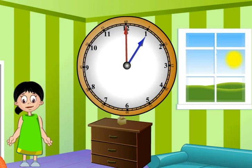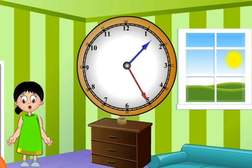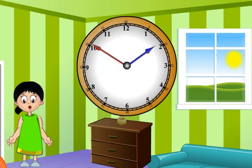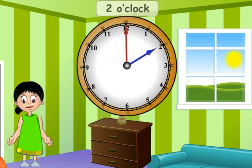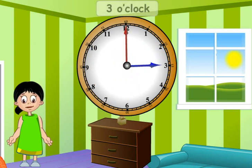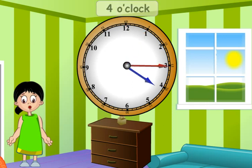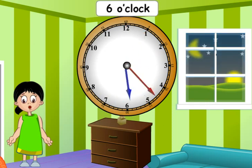Similarly, every time the minute hand completes one round, the hour hand moves to the next number. Thus, the time shown will be 2 o'clock, 3 o'clock, 4 o'clock, and so on.